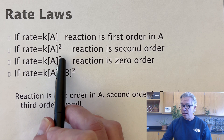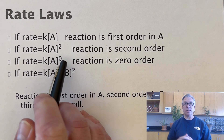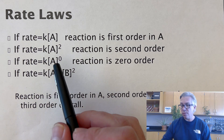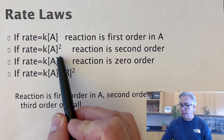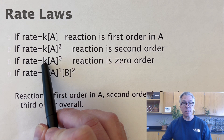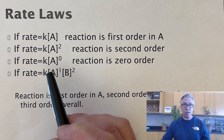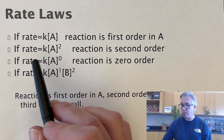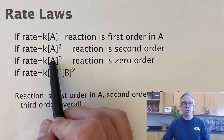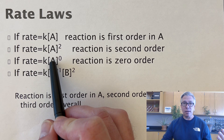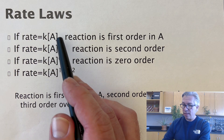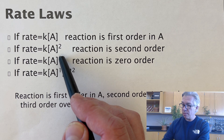What if the exponent was 0 — zero order? If you know from math that anything raised to the 0 is just 1, the rate basically becomes a constant. There are some reactions that proceed at a constant rate regardless of how much reactant is present, and that would be a zero-order reaction. In AP Chem, we are only required to know first, second, and zero order, or some combination of them.